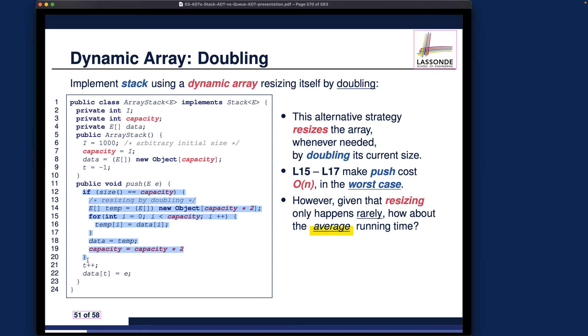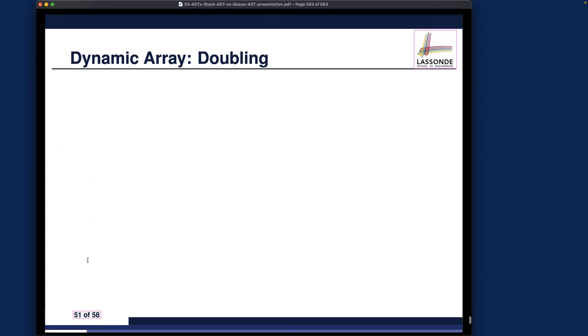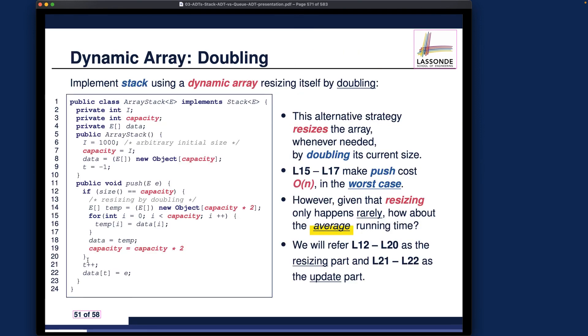So now we want to ask for the fixed constant strategy over here, strategy number one versus the doubling strategy over here, which one is going to require less frequent resizing? Because every time when you do the resizing, it's actually going to take a linear time. But let's say if one strategy will take substantially less frequent invocations of the resizing portion of the code, in that case, the average time we can average this out into maybe several push operations. In that case, the average time will be substantially lower.